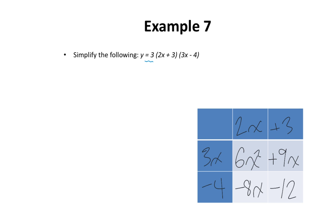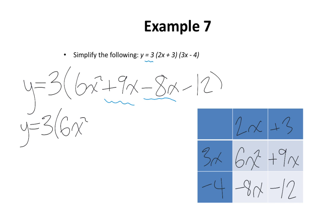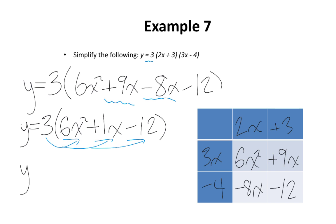I'm going to rewrite these terms, keeping the 3 outside since I haven't touched it yet. Everything else goes in brackets: 3 times the quantity 6x squared plus 9x minus 8x minus 12. Identifying like terms — positive 9x and negative 8x — and collecting: 9x subtract 8x is positive 1x. The negative 12 stays the same. Using the distributive property, everything gets multiplied by 3.